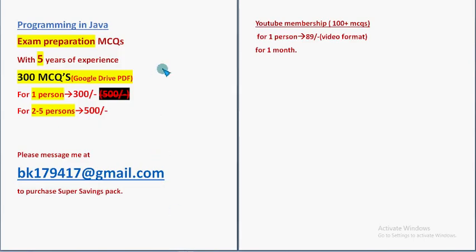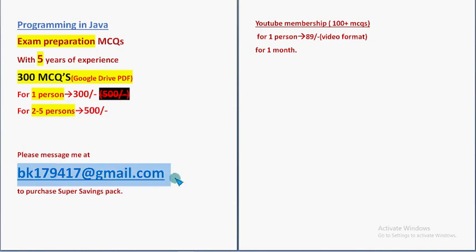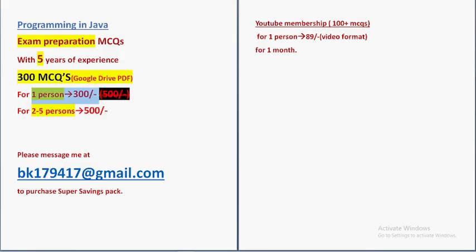These are the most probable solutions for the week 5 assignment of the course Programming in Java. Hope this video was helpful. If so, definitely subscribe, like the video, and share with your friends and classmates. Don't forget to purchase the 300 MCQs pack — past NPTEL assignment MCQs in a Google Drive PDF restricted link, 300 rupees for 1 person, 500 for 2 to 5 persons combinedly. Mail BK179417 at gmail.com. Form a group of 2 to 5 persons and one person take the lead and mail. Keep supporting us — until the next video, goodbye, thank you.